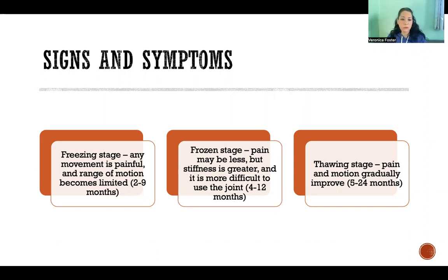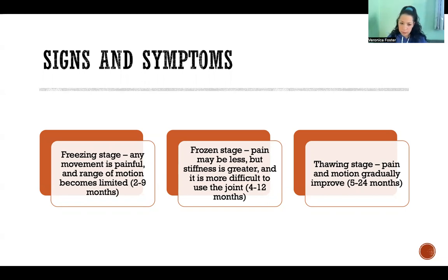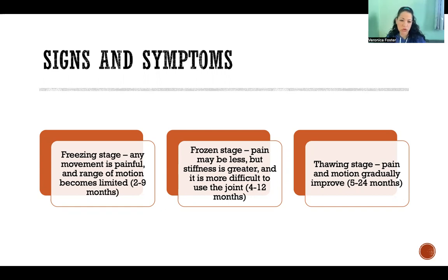The next stage is the frozen stage. You've reached a steady point in the progression of signs and symptoms. The pain at that point might be less — it does sometimes lessen during this stage. But the stiffness and restriction in range of motion tends to be greater during the frozen stage, making it more and more difficult to use the joint and move normally. That stage can last about four to twelve months.